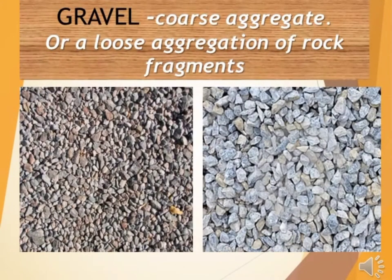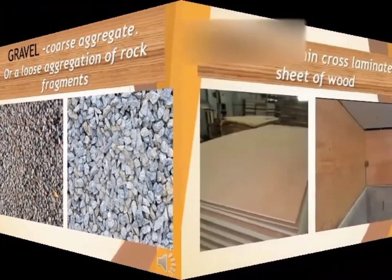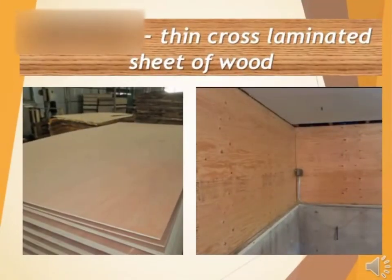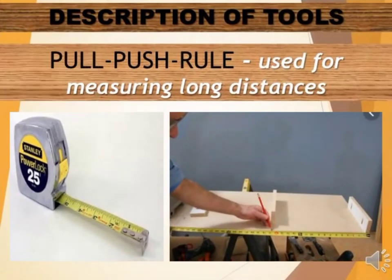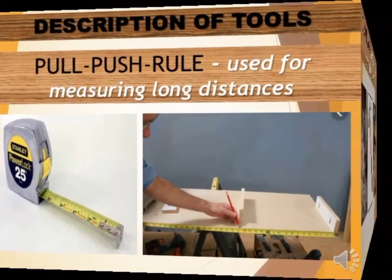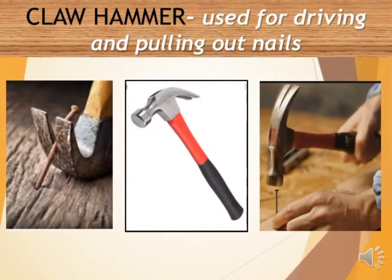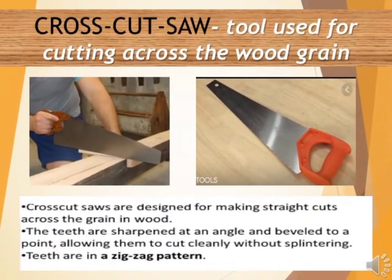We have Gravel — it is a coarse aggregate or a loose aggregation of rock fragments. Next, we have Plywood — a thin, cross-laminated sheet of wood. Then, we have Pull Push Rule — it is used for measuring long distances. We have Claw Hammer — used for driving and pulling out nails. Then, we have Cross Cut Saw — this tool is used for cutting across the wood grain. Cross cut saws are designed for making straight cuts across the grain in wood. The teeth are sharpened at an angle and beveled to a point, allowing them to cut cleanly without splintering. The teeth are in a zigzag pattern.